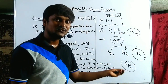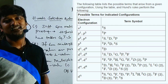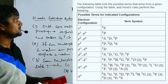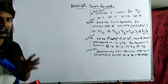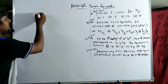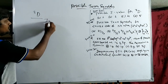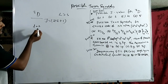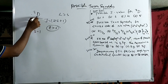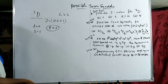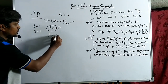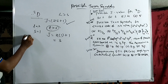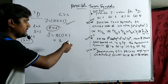Now let us solve some previous year CSIR problems. The first problem asks for the possible J values for the ³D term. For ³D, D means L = 2 and spin multiplicity 3 means S = 1. Since L > S, the formula gives 2S+1 = 3 possible J values. J values lie between L+S and L−S: J = 2+1 = 3, J = 2, J = 2−1 = 1. So there are 3 possible J values.